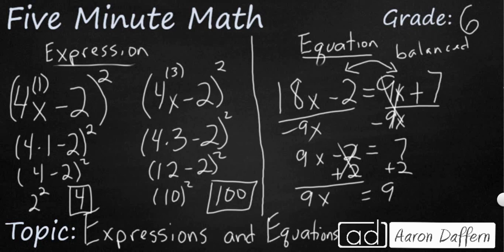So 9x equals 9. I just need to divide both sides by 9. And it looks like 9x divided by 9 is 1. So that's going to leave my x by itself. 9 divided by 9, that makes 1. So in this case, to make this equation true, it looks like x needs to be 1.